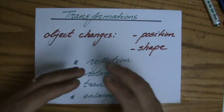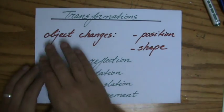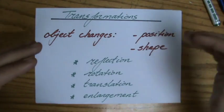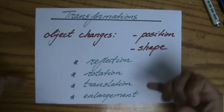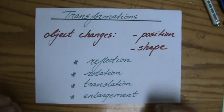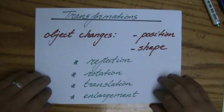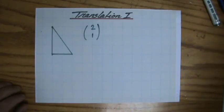are doing transformations. A transformation is nothing more than an object changing either position or shape, and sometimes both. We've done reflections, we've done rotations, we're doing translation now, and then enlargement later.